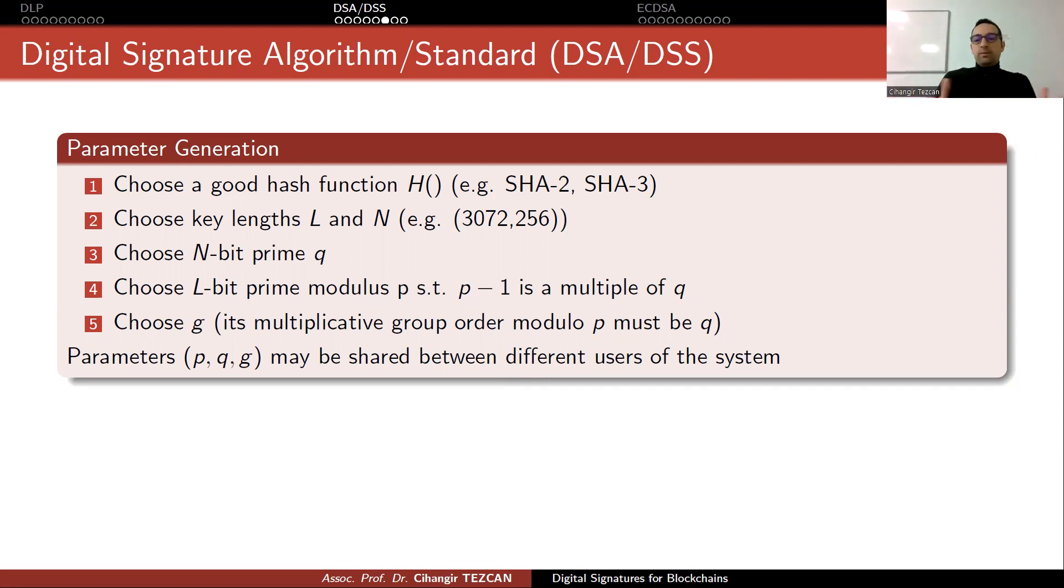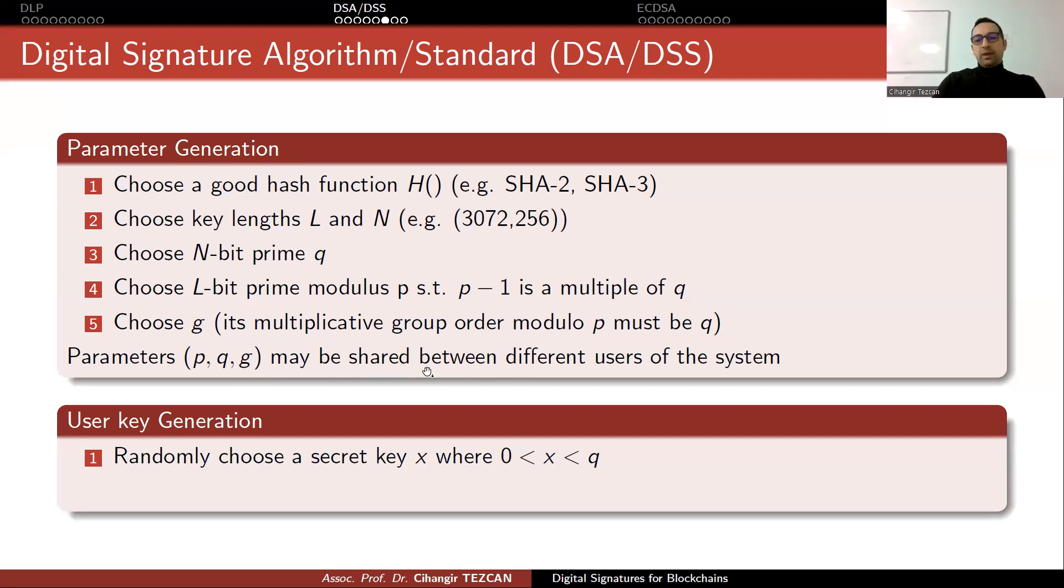This is the generation part. First, you can generate these parameters P, Q, and G. And you can share this between different users of the system. For instance, if Bitcoin used this algorithm, what it was going to do was to choose this P, Q, and G and put it inside the software, and everybody else will be using these parameters. Instead, it uses elliptic curve digital signatures. So instead of these parameters, we will use elliptic curve parameters there. But you can simply choose this one and use it for everybody. Or for instance, you want to communicate to 10 people in your life. For each of these 10 people, you can generate different P, Q, and G. Choice is yours. But of course, sticking to one parameter and standardizing it makes things easier.